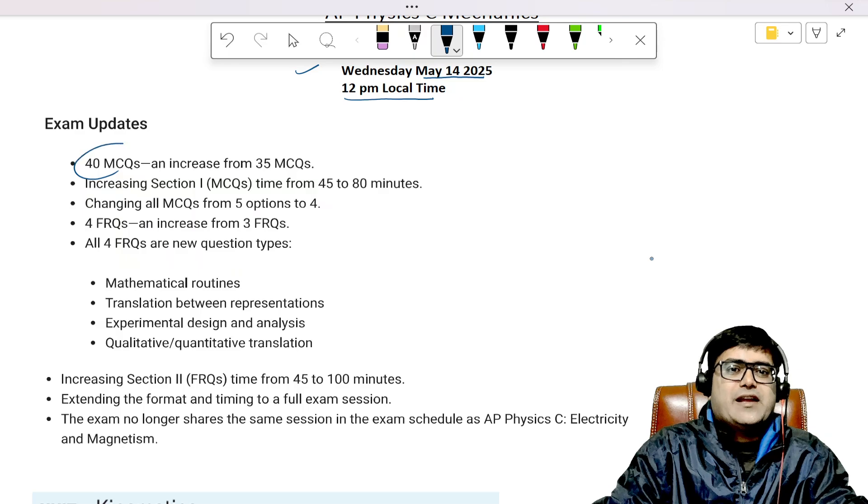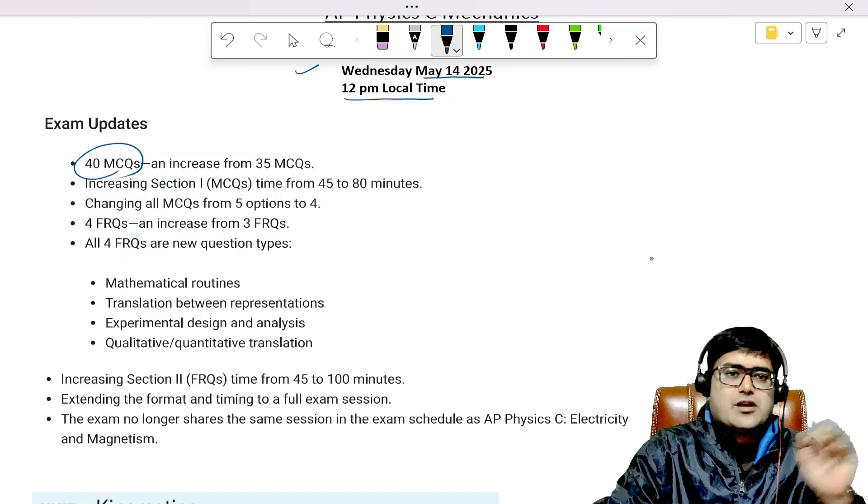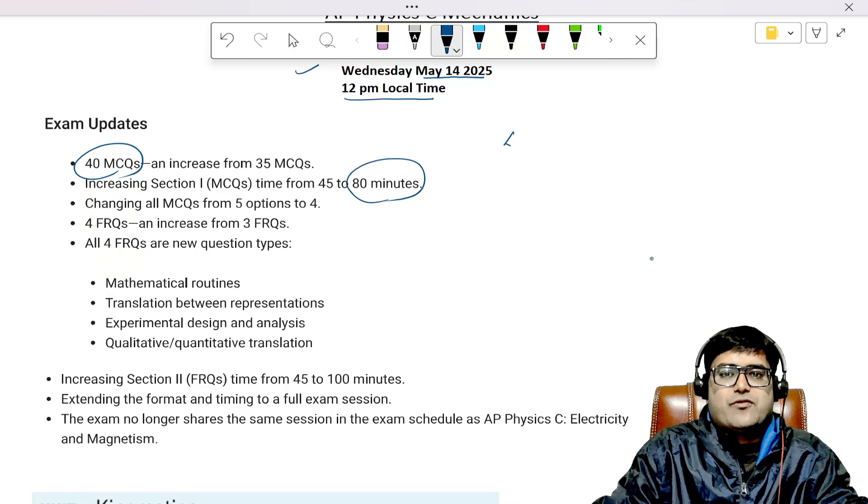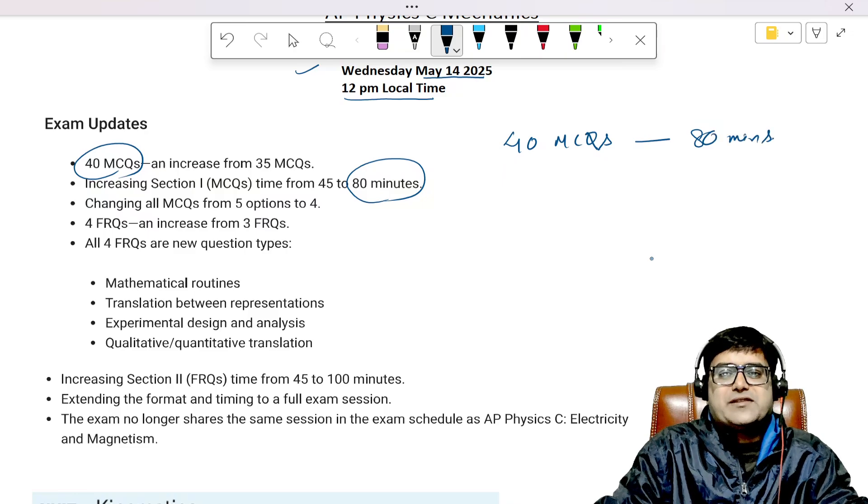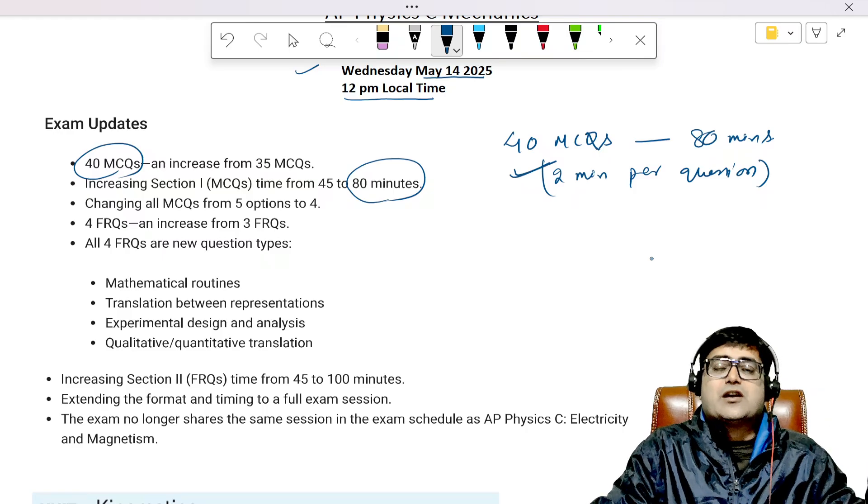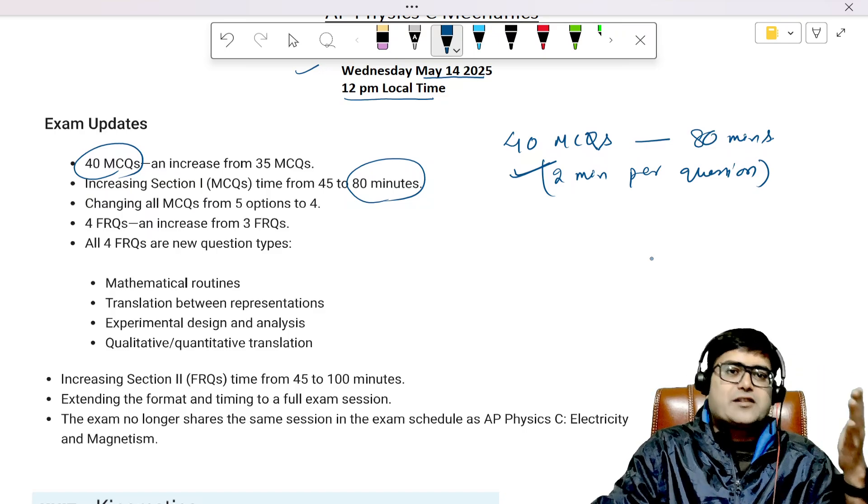We're going to talk about the changes that have happened in AP Physics C Mechanics for 2025. Now you will be getting 40 MCQs, multiple choice questions, with only one correct option. The time is now 80 minutes, so you have basically two minutes per question. This is actually very tough. There would be some questions which would take more than two minutes, sometimes five minutes. You'll be stuck in the question.